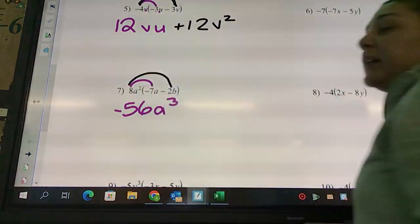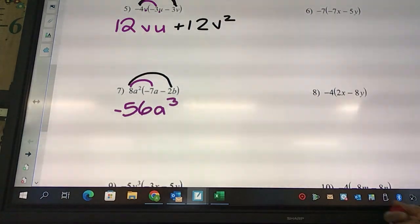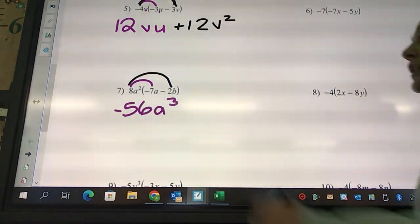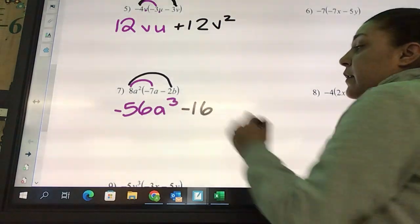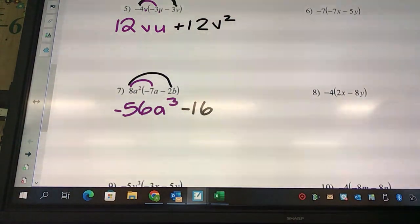Eight times negative two is negative 16. And what's the letters going to look like? a²b.